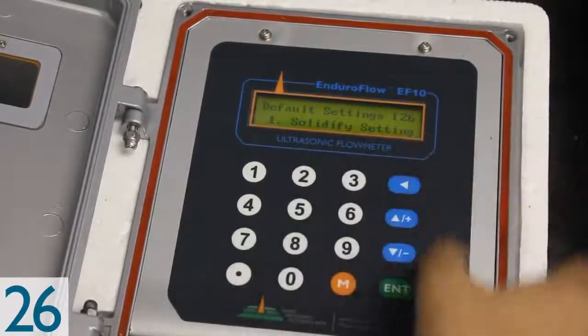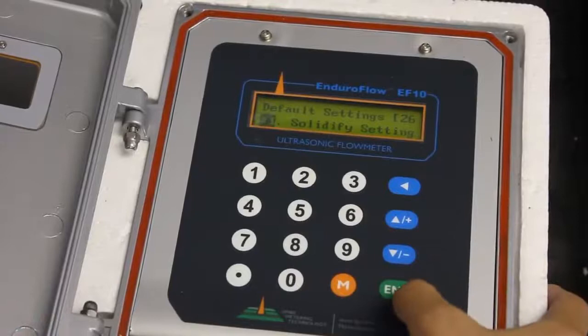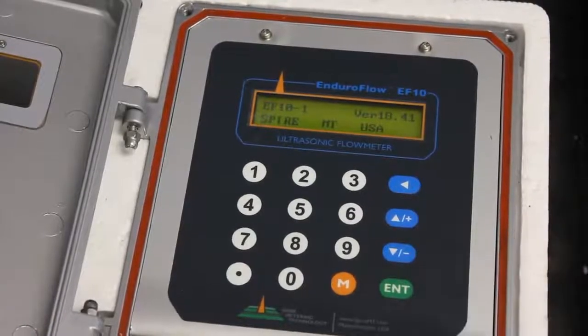Then go to menu 26 to save the parameters. So menu 26, press enter. Solidify setting. Enter. And it's saved.